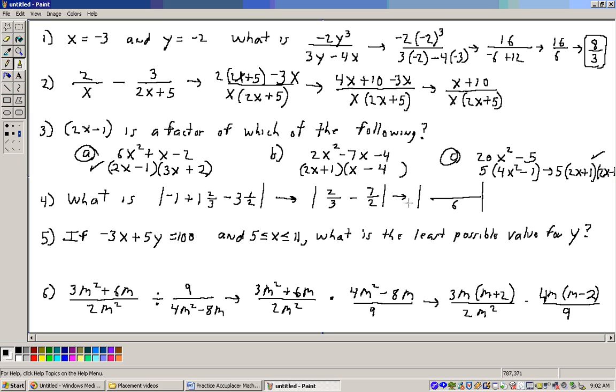So now, I got 2 thirds minus 7 halves. Common denominator between 3 and 2 is 6. 3 goes into 6 two times, 2 times 2 is 4. 2 goes into 6 three times, 3 times 7 is 21. When I subtract these, I get the absolute value of negative 17 over 6. And the absolute value makes that positive. So the answer would be 17 over 6 or 2 and 5 over 6.